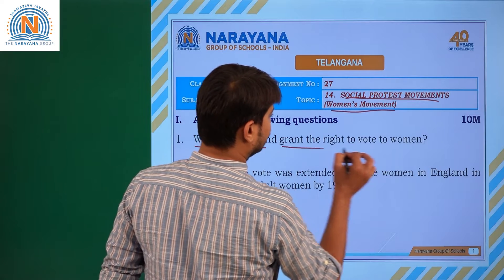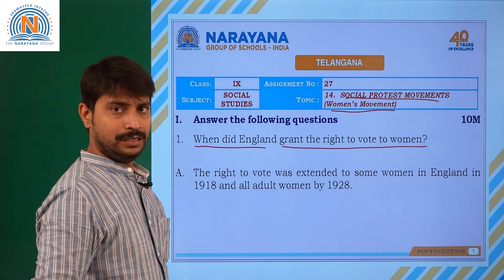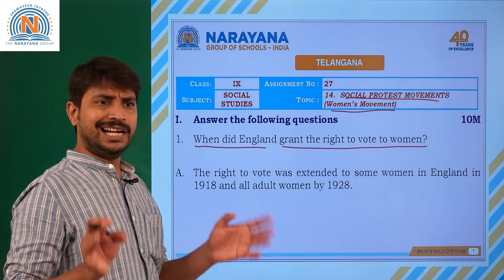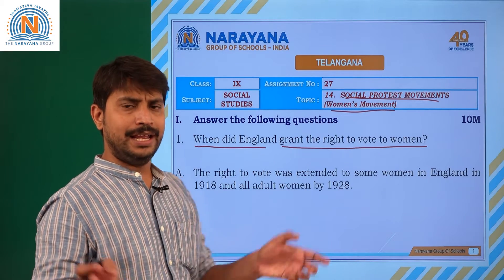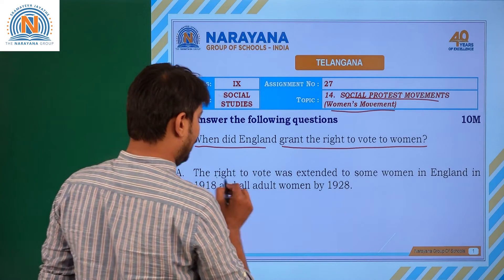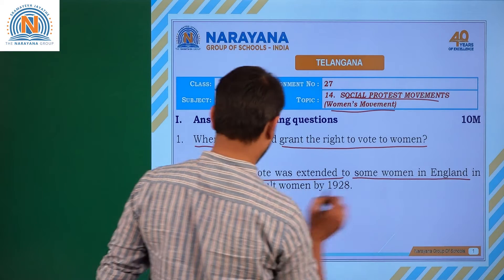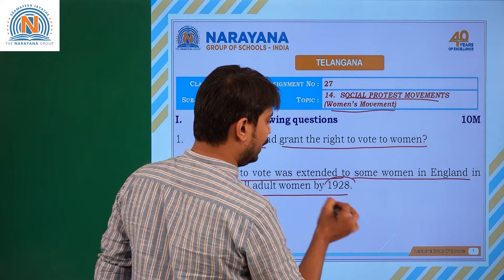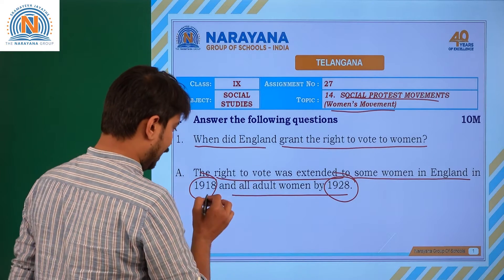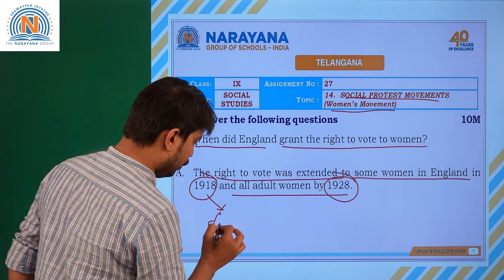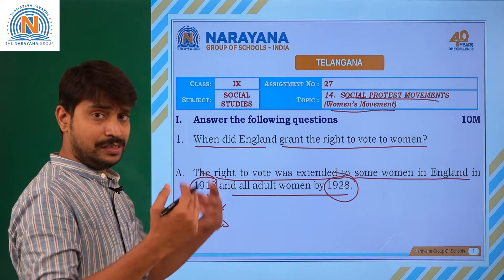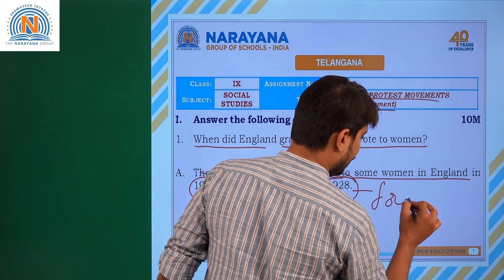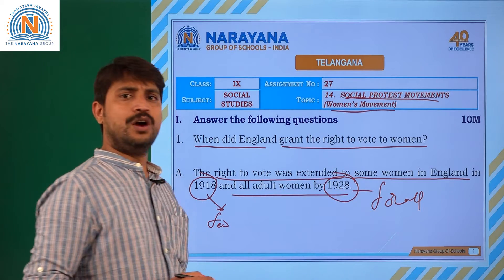When did England grant the right to vote for women? As a democratic country, not only in India but throughout the world, each and every country has been given equal provisions, especially in the right to vote. In England, the right to vote was extended to some women in 1918, and to all adult women by 1928. Initially, provisions were given only to a few — women who belonged to elite, rich families — but by 1928, it was extended to all as per universal adult franchise.